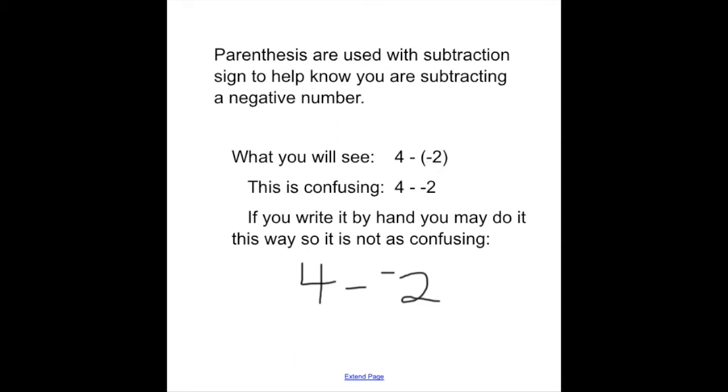If they didn't do this, you would see something like 4 minus negative 2, but you're not really sure because it kind of looks like a minus minus, so it's kind of confusing. So this right here, 4 minus parenthesis negative 2, is what you're going to see. If you do write it by hand, you may do it with the parentheses, or you may do it this way. This is normally the way I write it.